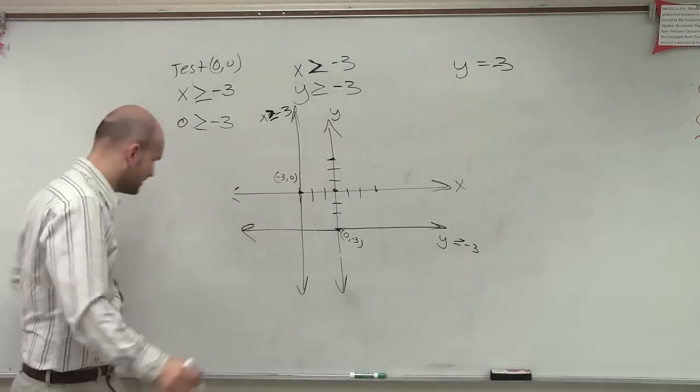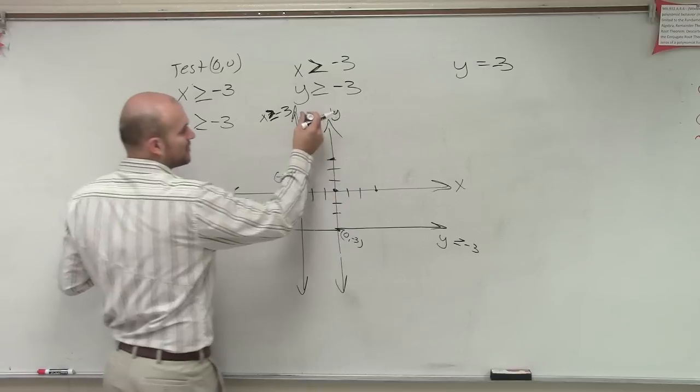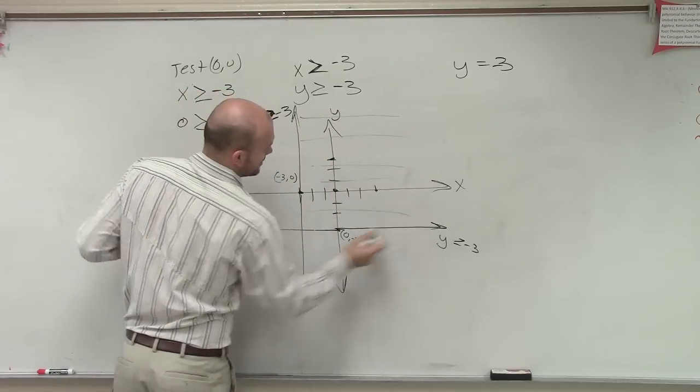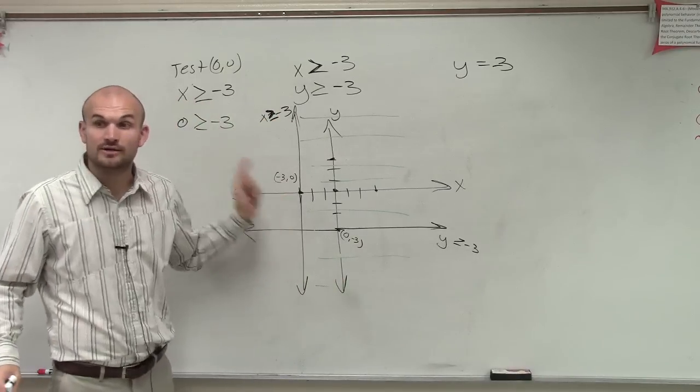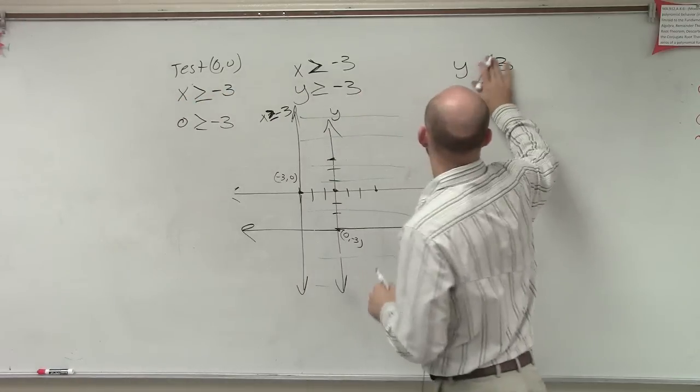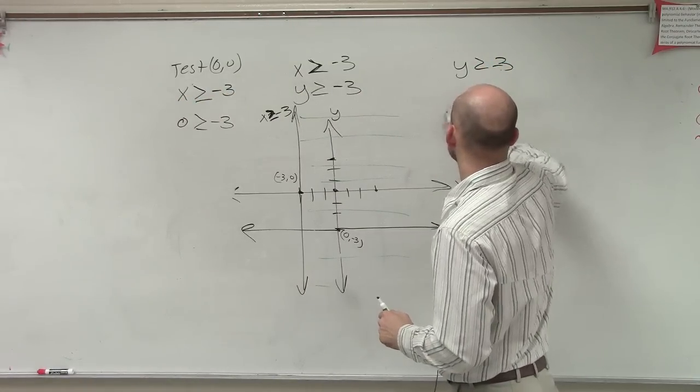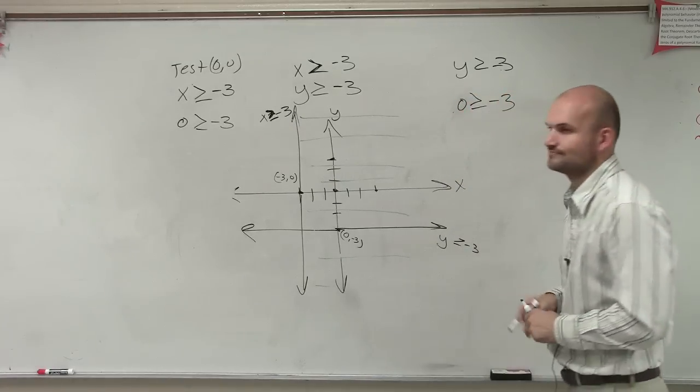So for this point, it's true. So what I'm going to do is, since it's true, and it's to the right of my vertical line, I'm just going to kind of draw some little shade marks. And what that tells me is all points to the right of this line are going to be true. Now let's test this one. y is greater than or equal to negative 3. So I say 0 is greater than or equal to negative 3. Is that true or false? True.